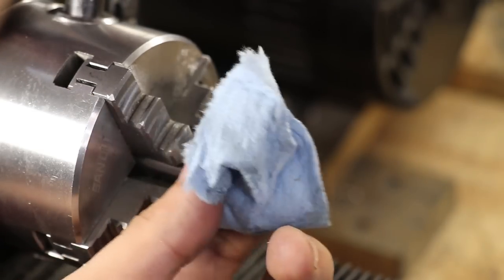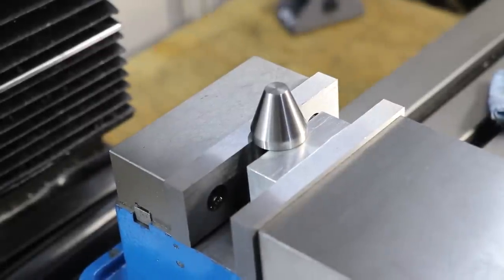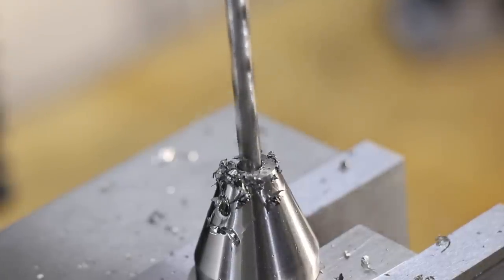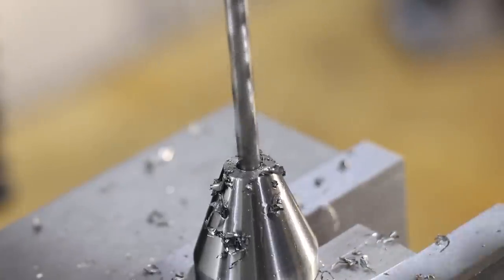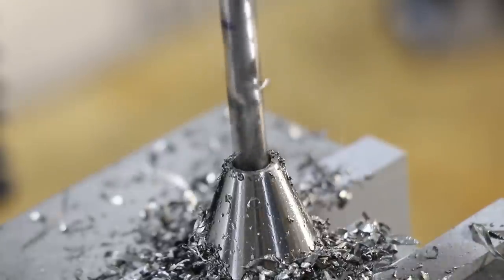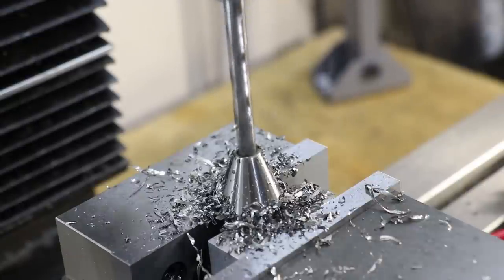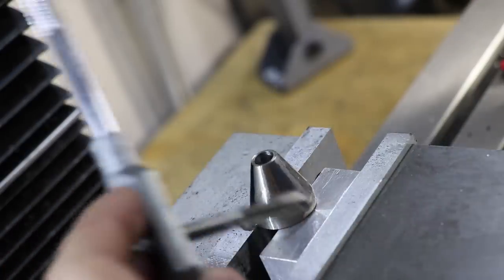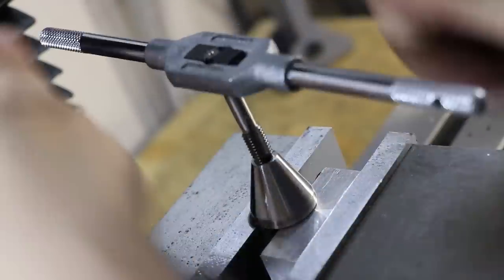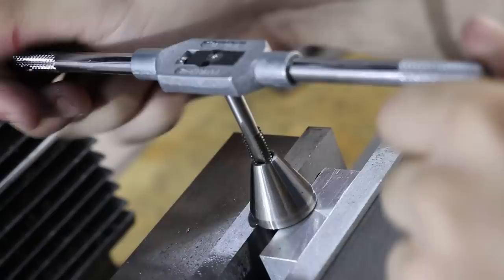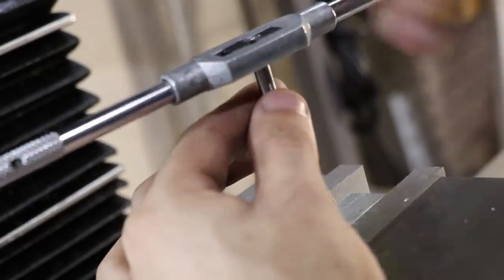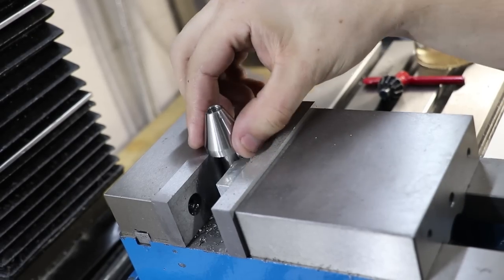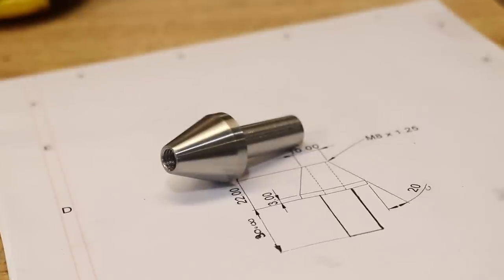I won't be able to do that on the small lathe, so I'll use the mill. I'll drill a small pilot hole and then I'll follow it up with a much bigger one. And it's always a good idea to use cutting oil on stainless steel because it generates a fair amount of heat. Finally, I'll tap the part for M8. And that's the cone done.